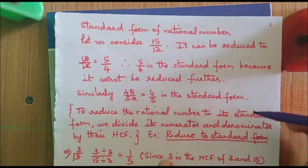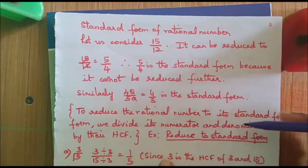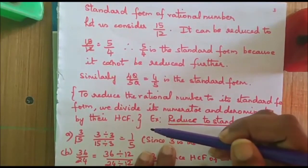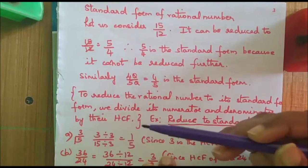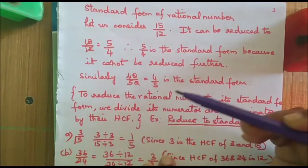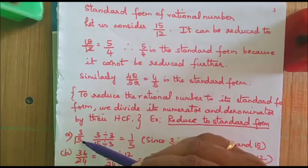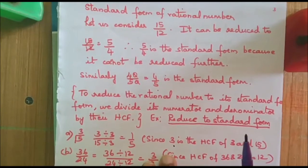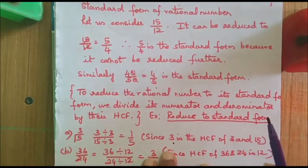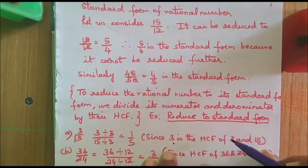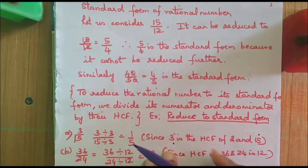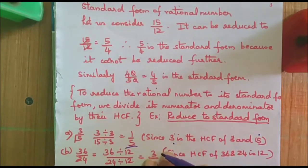To reduce the rational number to its standard form, we divide its numerator and denominator by their HCF. Say, I am given a number 3 by 15. You can find the HCF of 3 and 15. What is the HCF of 3 and 15? It is 3. So, if I divide 3 by 3 and 15 by 3, I get 1 by 5. So, 1 by 5 is the standard form.